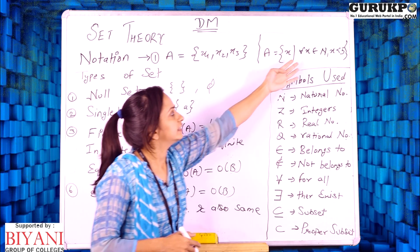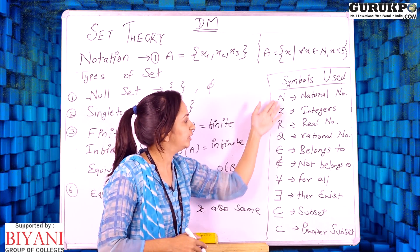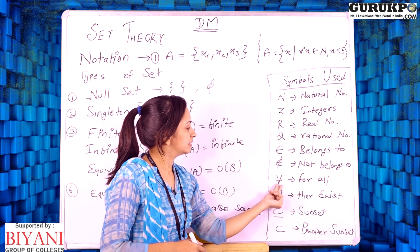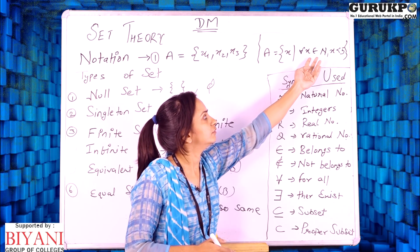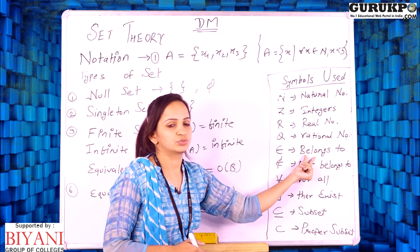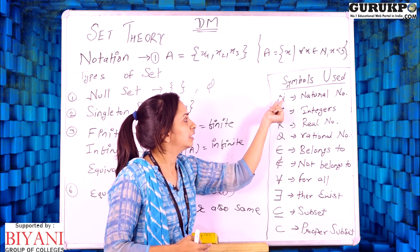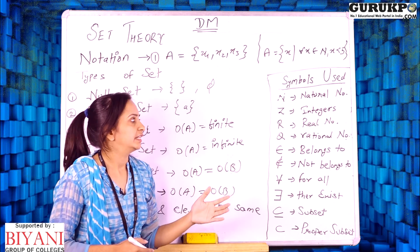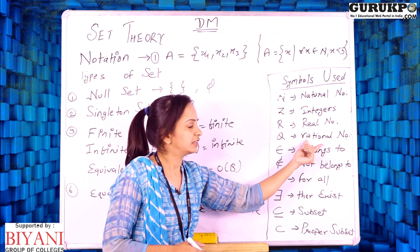These are some symbols used in set theory in discrete mathematics, and they have their own meanings. The first symbol is 'for all.' The symbol '∈' means 'belongs to,' meaning elements belong to capital N. Capital N is the set of natural numbers. Other basic sets are the set of integers, set of real numbers, and set of rational numbers.